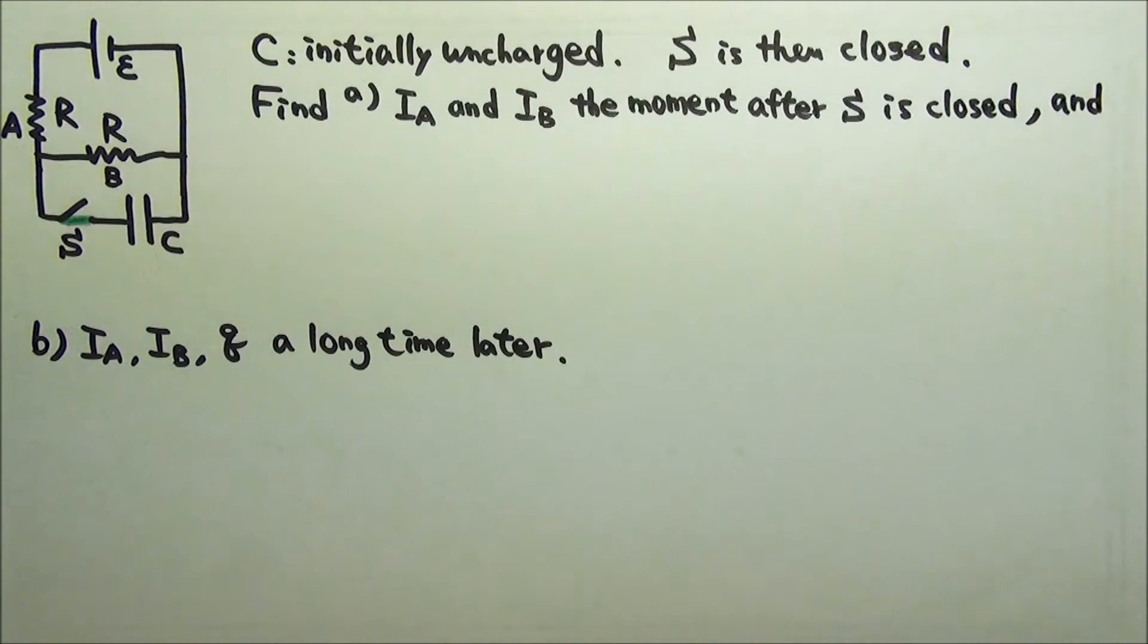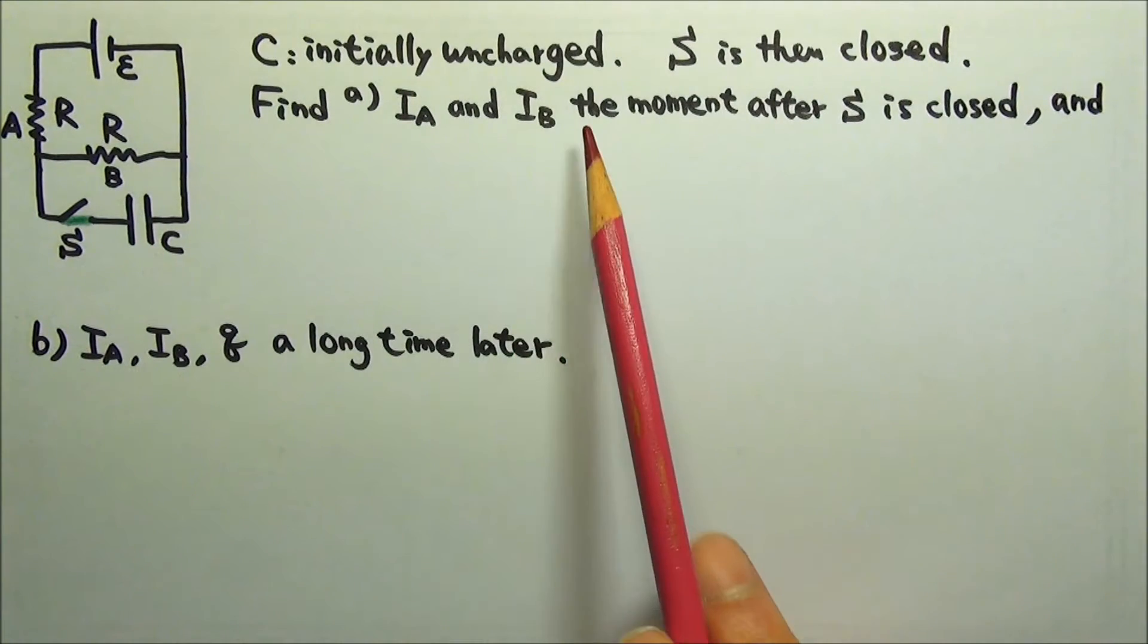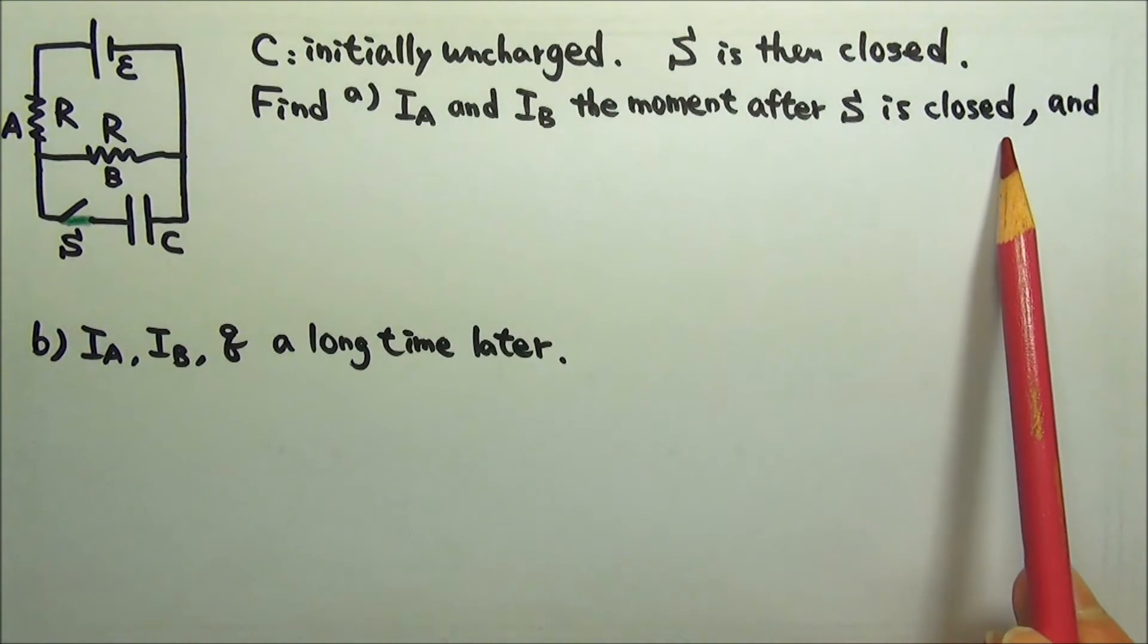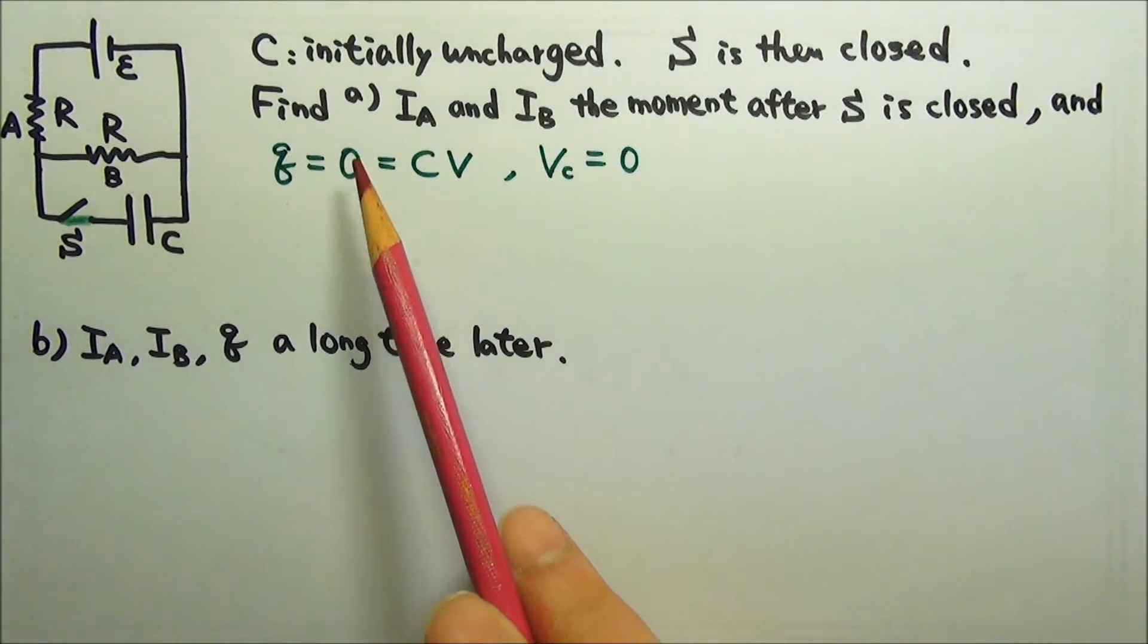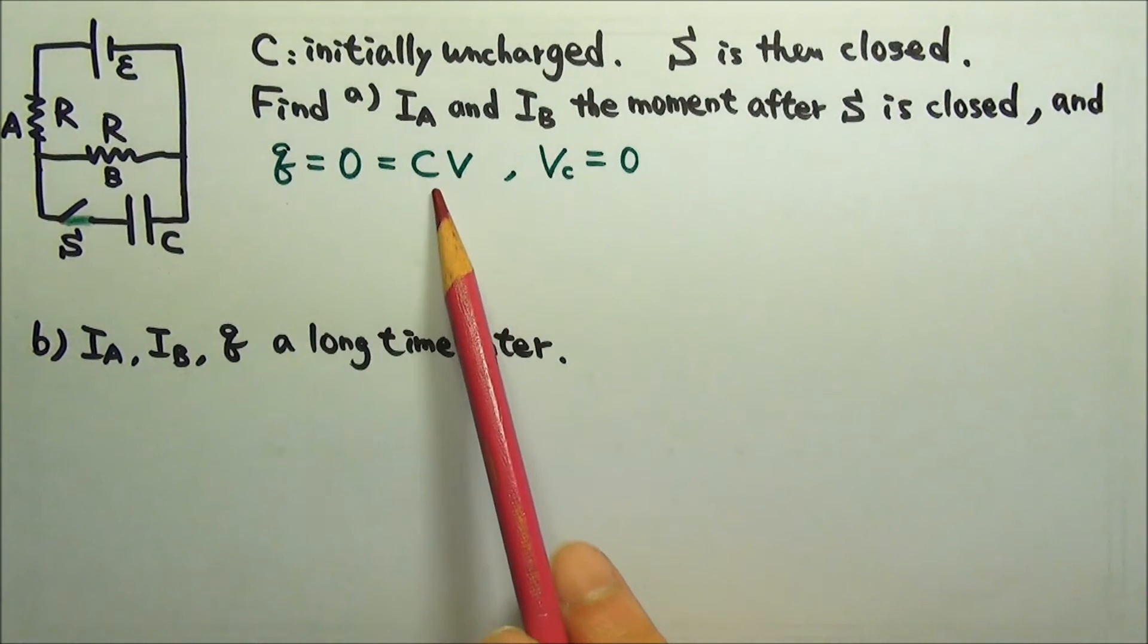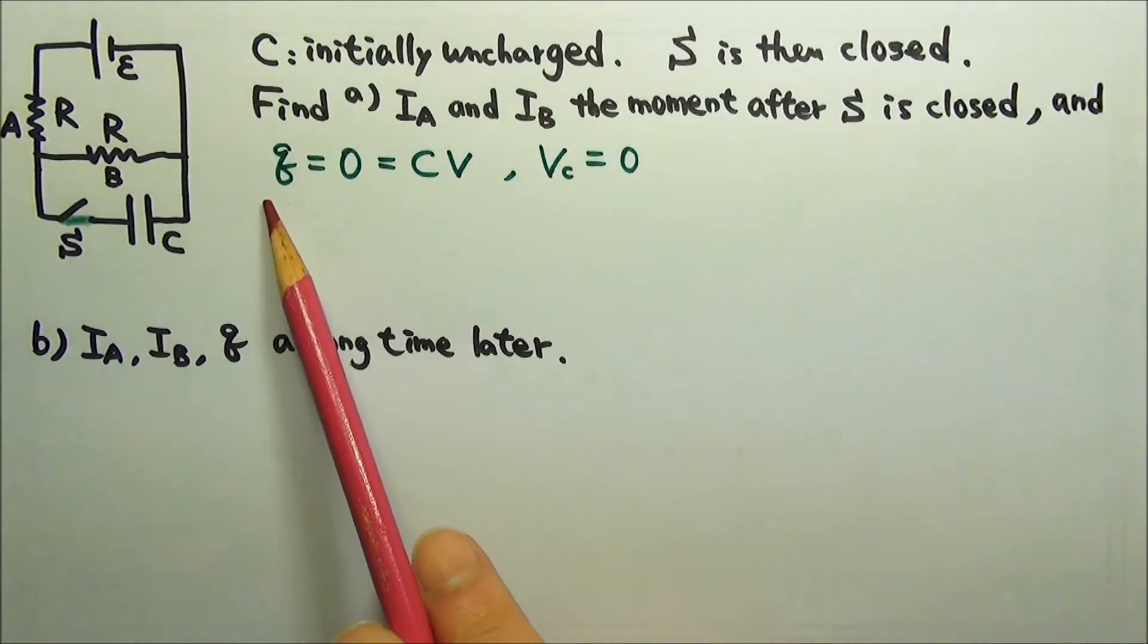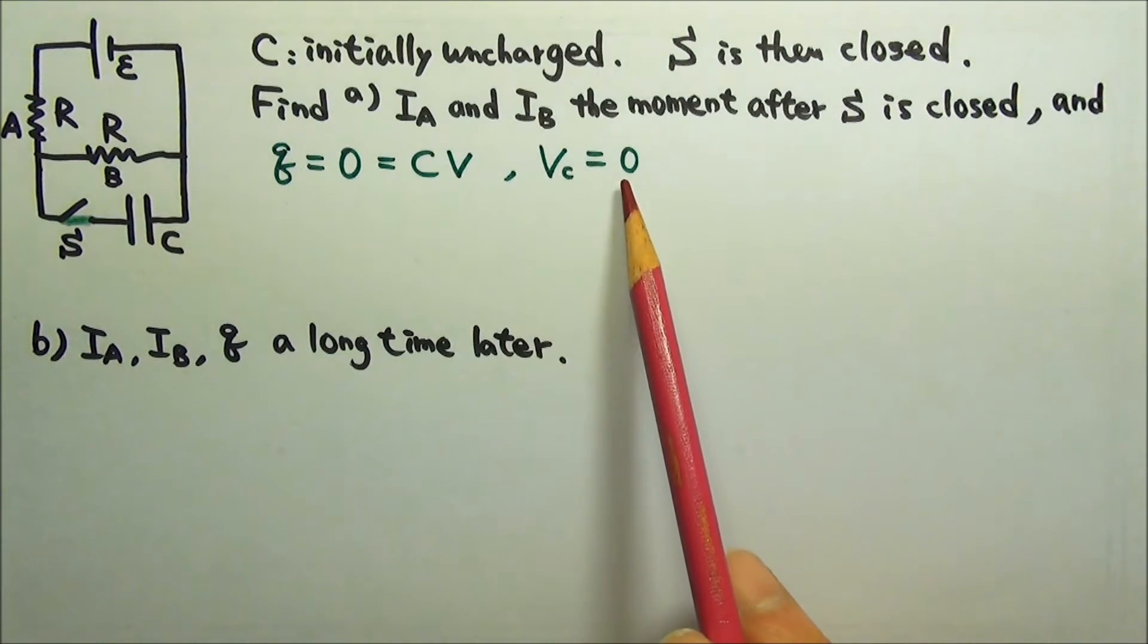Because it takes time to charge or discharge a capacitor, the moment after the switch is closed, the charge on the capacitor is still zero, the same as before. And Q equals CV. Q being zero means the voltage across the capacitor is also zero.